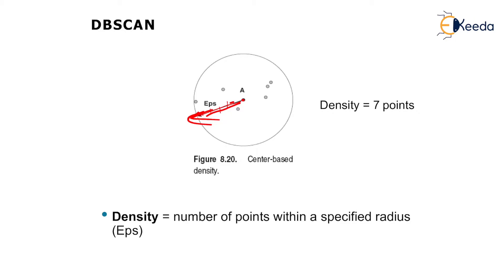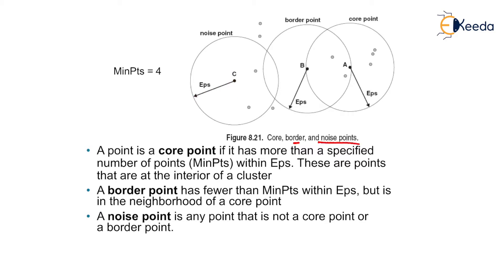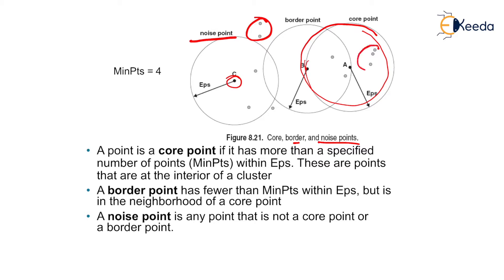Within that radius, we can calculate the number of points using DBSCAN's core, border, and noise points. The middle points are core points, and there are also noise points and border points. A point is a core point if it has more than a specified number of points within eps — these are points at the interior of a cluster.